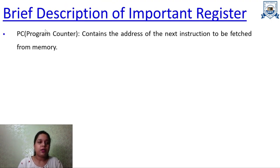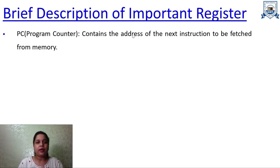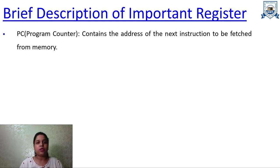The first register is the program counter. The program counter contains the address of the next instruction to be fetched from memory. Consider a program with several lines of code — every instruction has an address, and the address of the next instruction is stored in the program counter. For example, if we are on instruction 2, then 3 will be stored in the program counter.